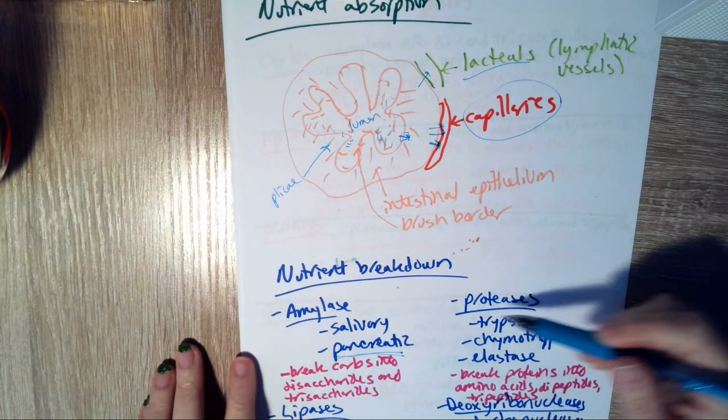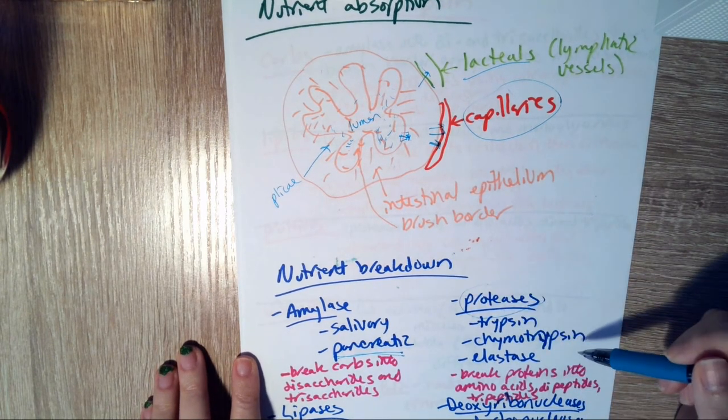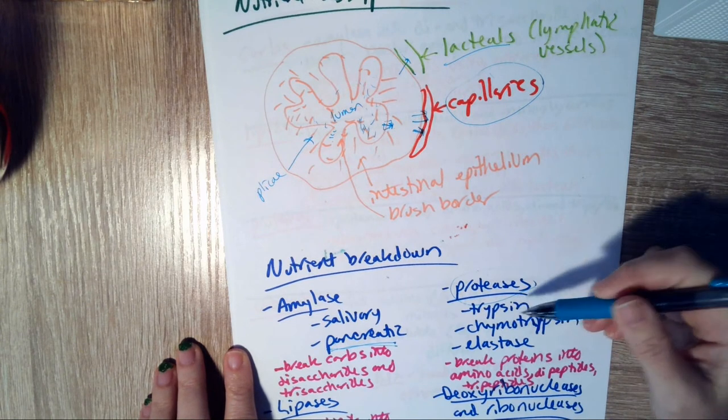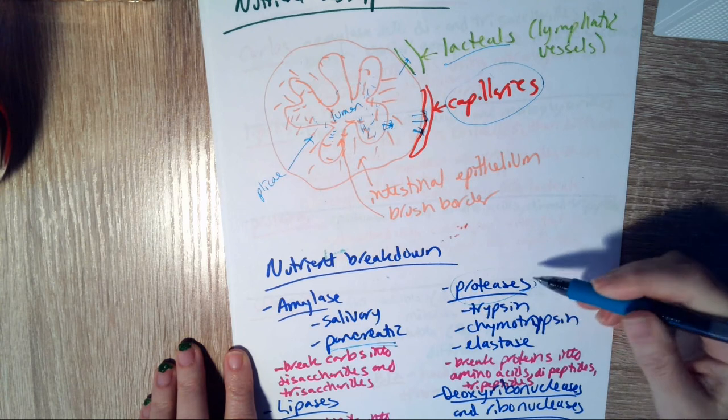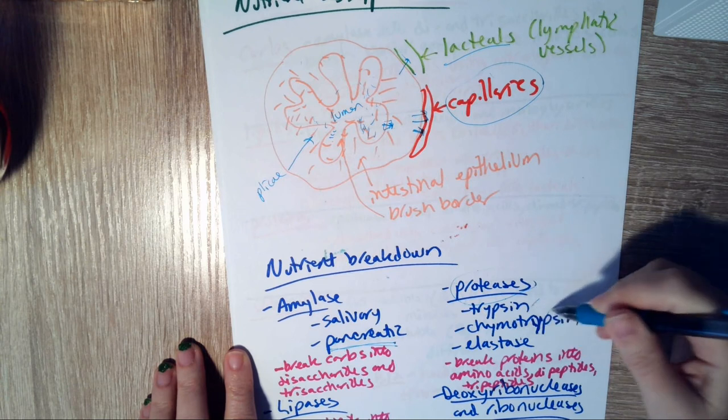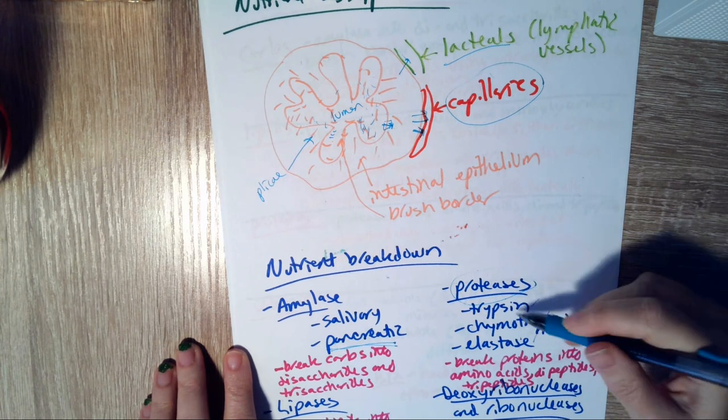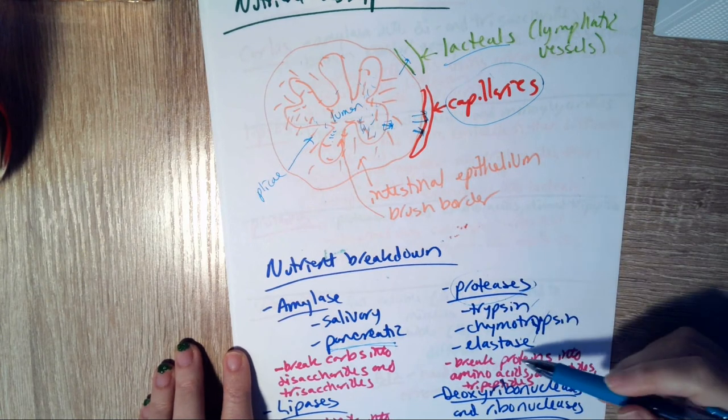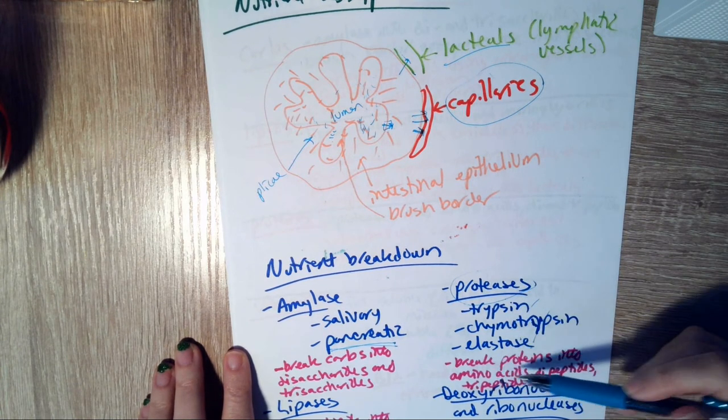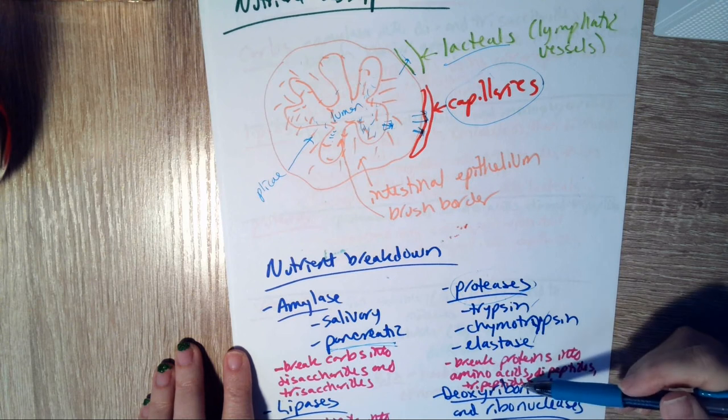Now, proteases. Proteases are found only in pancreatic juice. Three of them are called trypsin, chymotrypsin, and elastase. You don't need to know which particular amino acids each one of those is responsible for. Just know the names of them as examples of proteases. And what they'll do is they'll break your proteins down into amino acids, dipeptides, and tripeptides.